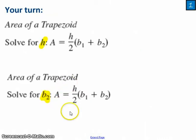Here's your turn to apply the same technique. Two different formulas—well, I'm sorry, the same formula two different ways. In one case, I'm asking you to rearrange it to solve for H, and in the second case, I'm asking you to rearrange it to solve for B2. So go ahead, hit the pause button, and when you come back, I'll show you the answers.